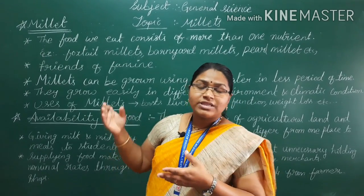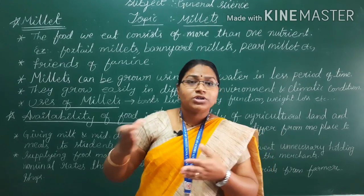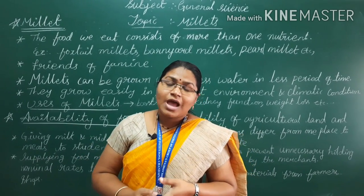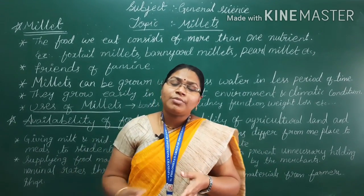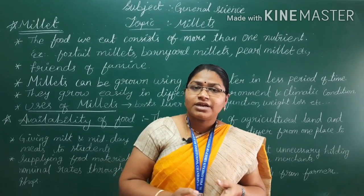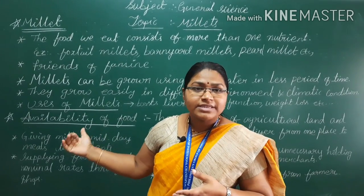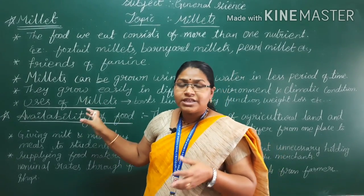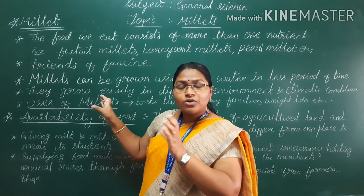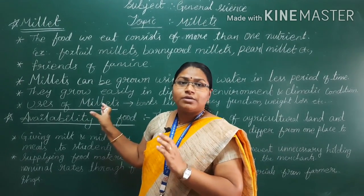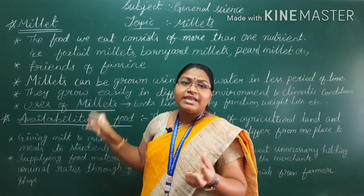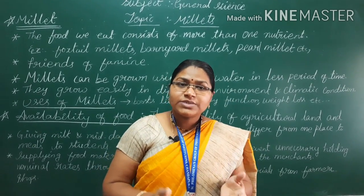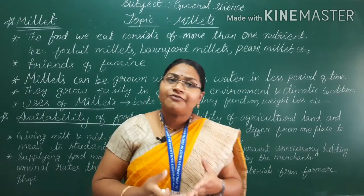Why are millets called friends of famine and friends of farmers? Because we can grow these millets in less water conditions and in a short period of time. Under any environmental or climatic conditions, we can cultivate millets as a crop. There is no need to use any chemical fertilizers, pesticides, or herbicides. That's why millets are the friends of famine.